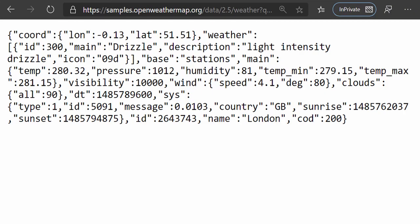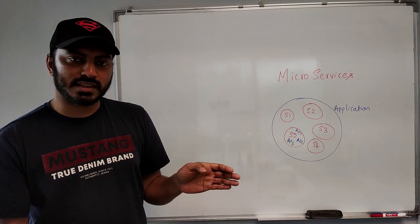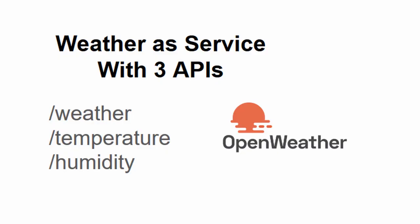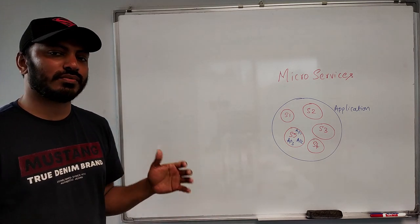Say, for example, this one, weather as service, in which if you pass a place name, you basically get all of the weather information related to that particular place. But weather as service might contain many other APIs. Say for example, you pass place name, you get temperature or humidity or there could be many other attributes related to weather.